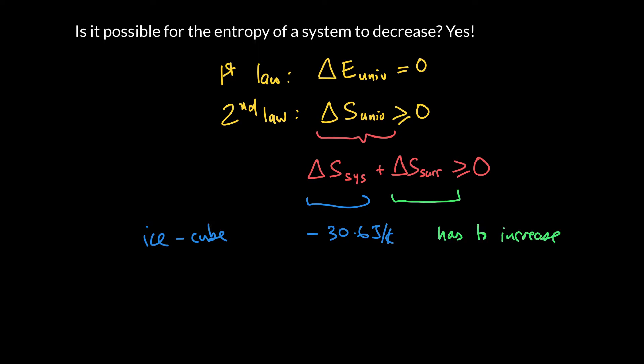And not only that, it can't increase by any old value. It has to increase by at least 30.6 joules per Kelvin. So it can increase by a larger amount, but that would be the minimum value that it could increase and not change the entropy of the universe in a negative direction.